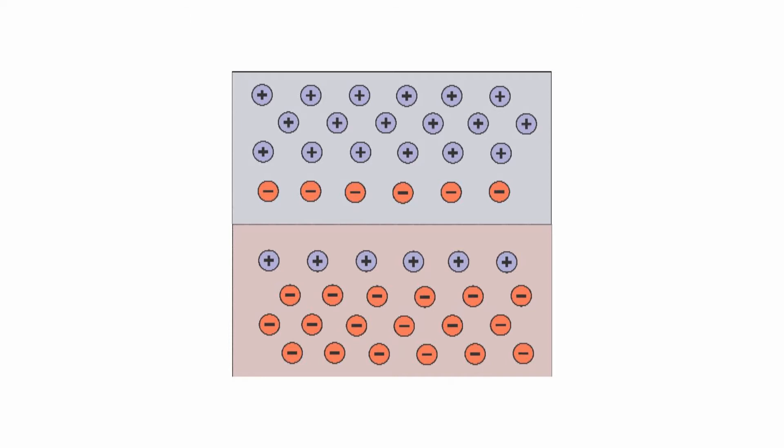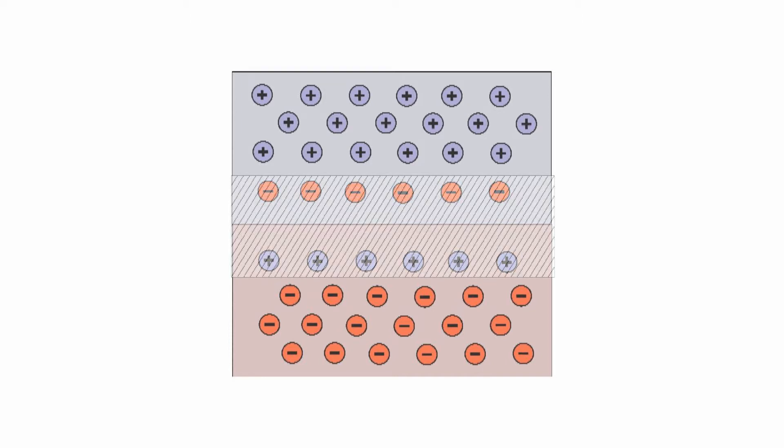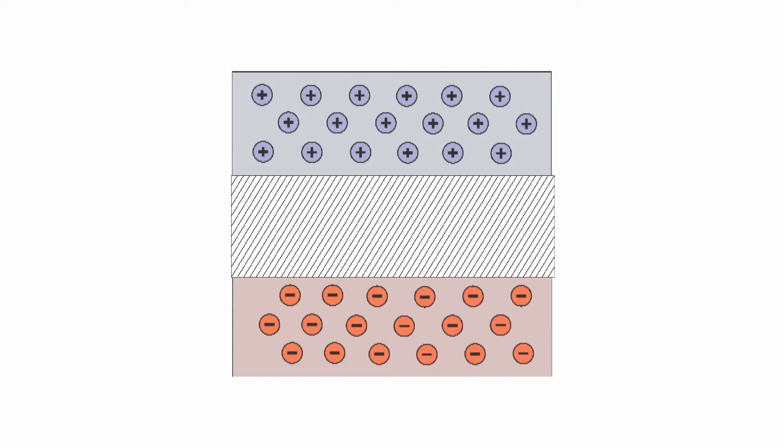You should also notice that the silicon around the junction has no available carriers, neither holes or electrons. This area is called the depletion region. The depletion region with the electrical potential across it is important to us in understanding how photosensors work.